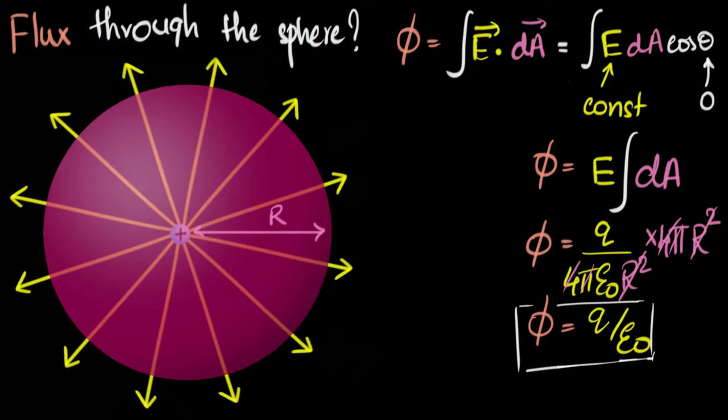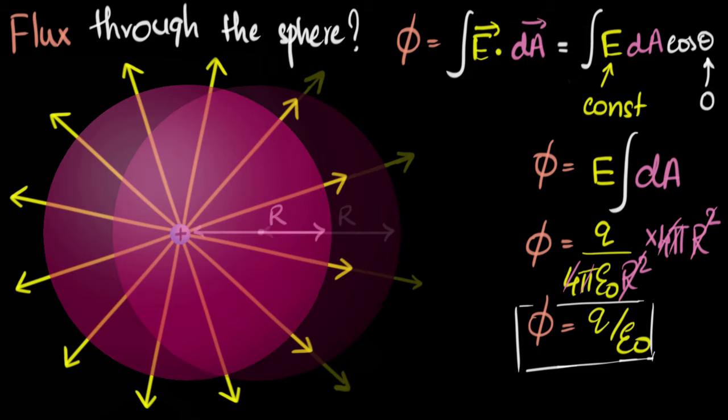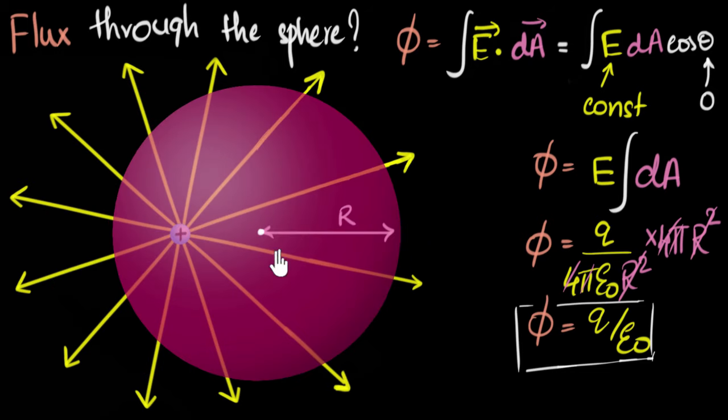Okay, now next question is, what if I move the sphere a little bit to the right? Or let's say I move the charge a little bit to the left, off center, that's important. Now what will happen if you calculate the flux through the entire surface? Will the value remain the same now? Or increase or decrease? This is a little bit more interesting. So again, pause the video and give this a try.